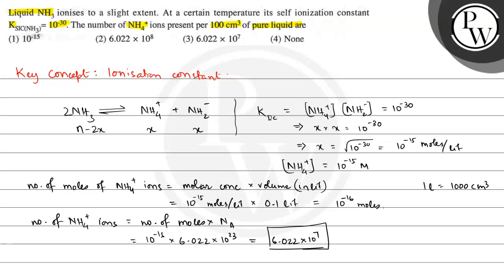This is the number of NH4+ ions present in 100 centimeter cube of the pure liquid, which is correctly given in option number 3. So the final answer is option number 3. I hope you understood the concept well. Best of luck!